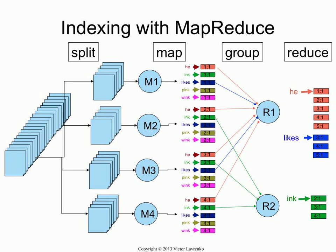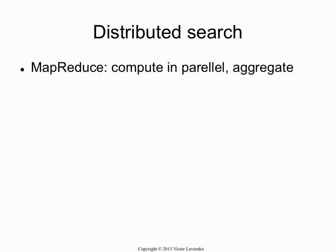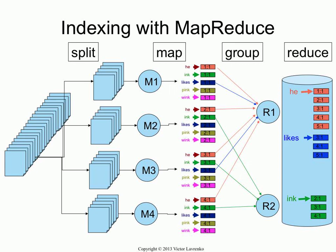Once you have done that, basically what you have is at each reducer a complete index for a subset of the terms — not a partial index, but a complete index for those words. Reducer 1 would have a complete index for the word 'he', and reducer 2 would have a complete index for the word 'ink'. The next step is just to concatenate them — you don't need to merge them because they're already in the right order. But you might notice: you built them in parallel, and then you're concatenating them all into one thing. Do you actually need to concatenate them? The answer is no — you could leave these partial indices sitting on different machines and run queries against a set of machines. Your index doesn't have to be on the same machine; it's actually better if you can parallelize it.